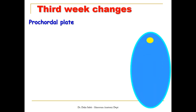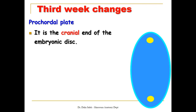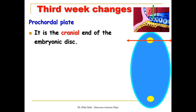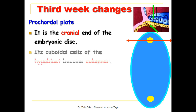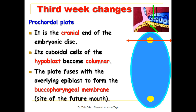What is the procordal plate? It is the cranial end of the embryonic disc. If we take a section in it, we notice the two layers that form this plate: the epiblastic layer and the hypoblastic layer. They are closely adherent to each other and will form a membrane called the oropharyngeal membrane that will rupture later on at the site of the future mouth.